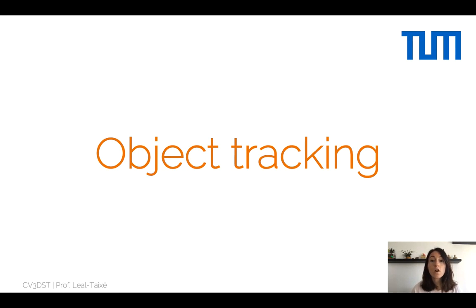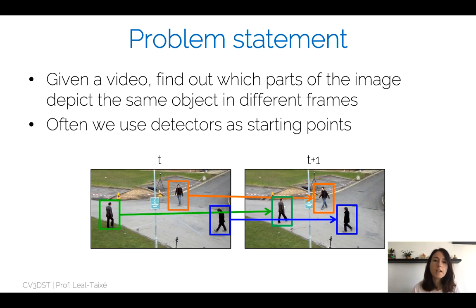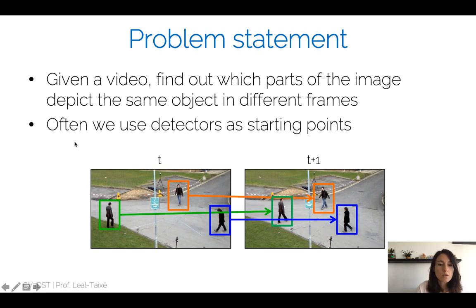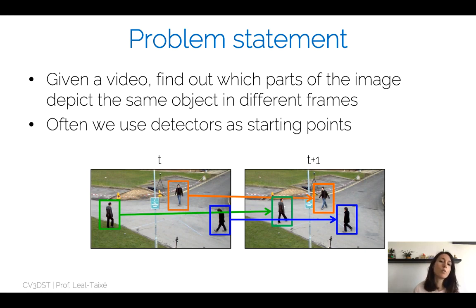Hello and welcome to the lecture on object tracking. Today we will cover single object tracking as well as multiple object tracking. When we refer to tracking, it means that given a video, we first want to find out which parts of the image depict the same object in different frames — for example, knowing that a green box depicts a pedestrian at frame t and the same pedestrian at frame t+1. So not only do we want to detect objects, but we also want to make this association across different time frames.